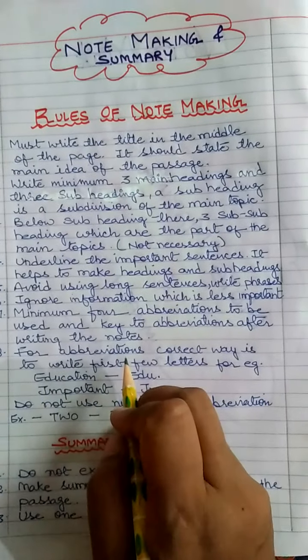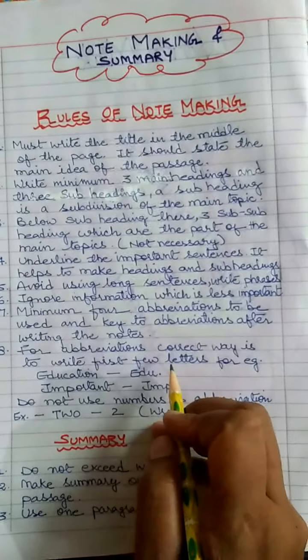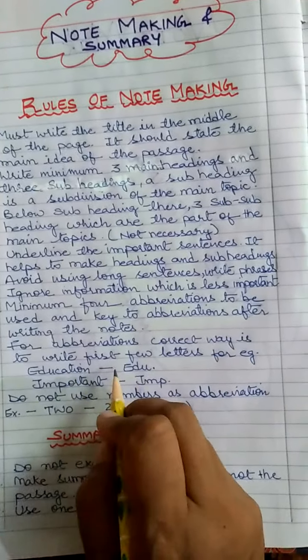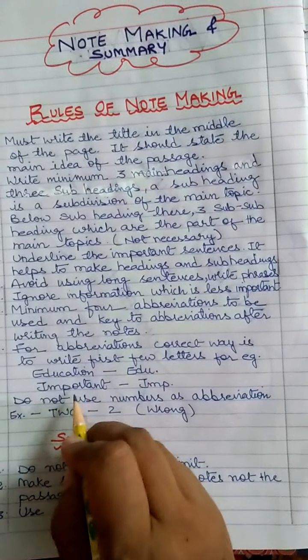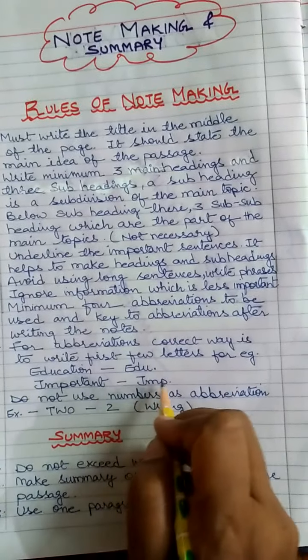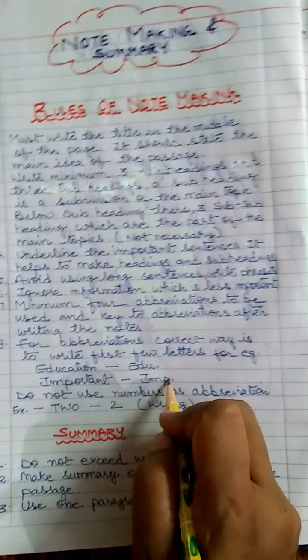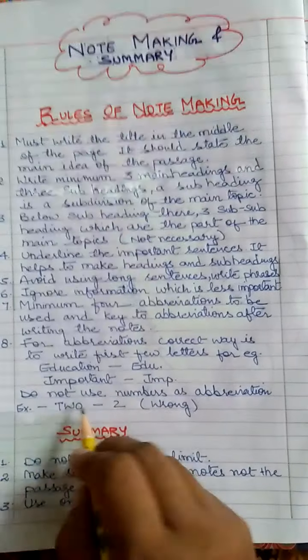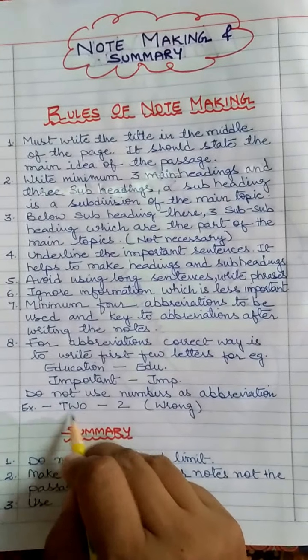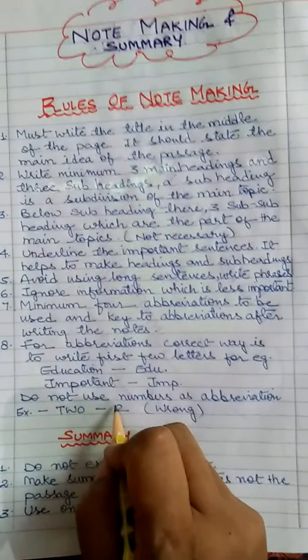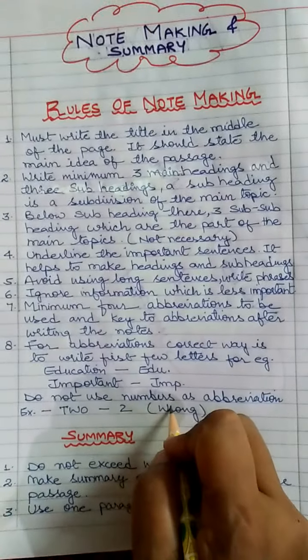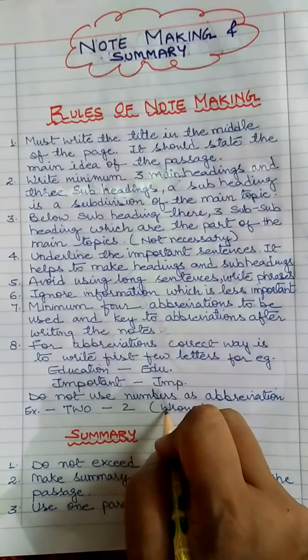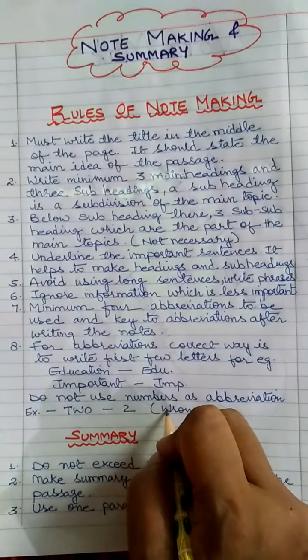Now for abbreviations, the correct way is to write first few letters. For example, education we can write edu, for the word important we can write imp. In abbreviations do not use numbers as abbreviation. For example, when it's written two in the passage, there's no need of writing the number 2. It's wrong. So this way of abbreviation should be avoided.